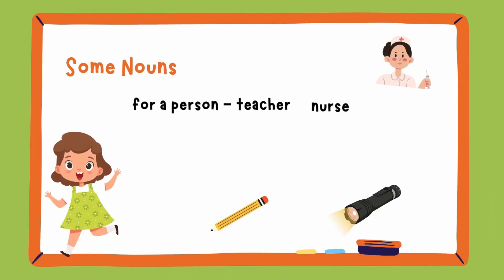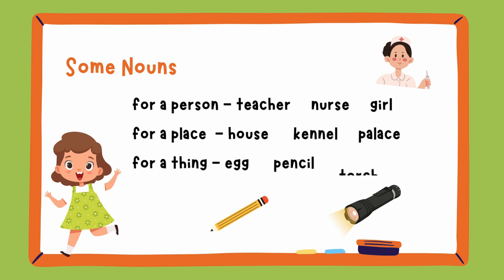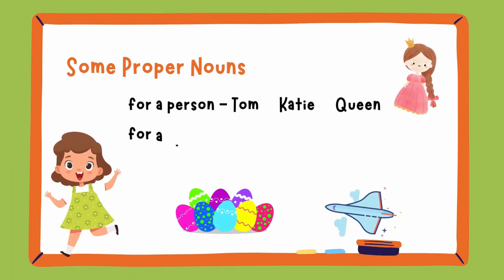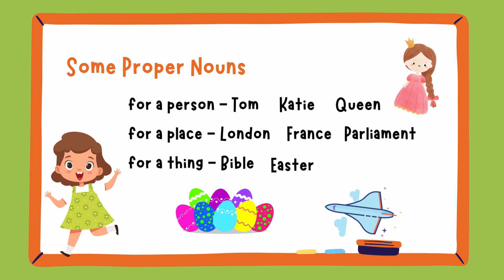Some nouns — for a person: Teacher, Nurse, Girl. For a place: House, Kennel, Palace. For a thing: Egg, Pencil, Torch. Some proper nouns — for a person: Tom, Katie, Queen. For a place: London, France, Parliament. For a thing: Bible, Easter, Concord.